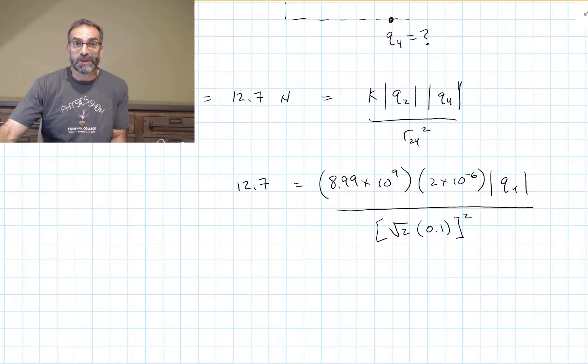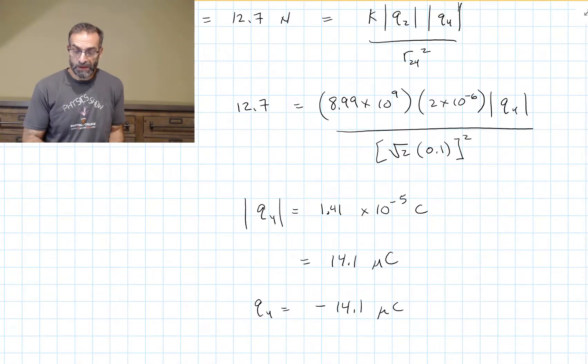I get 1.41 times 10 to the minus 5 coulombs for the magnitude of Q4. That's 14.1 microcoulombs, 14.1 times 10 to the minus 6. And of course we know Q4 is negative. So Q4 will end up being negative 14.1 microcoulombs.